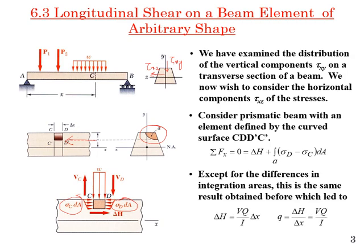If you remember, the sum of forces in the x-direction must equal zero. So delta_H = integral of (sigma_D minus sigma_C) dA = 0. These forces sigma_D and sigma_C are both due to bending moment, which we already derived previously. When we substitute sigma_D and sigma_C, we arrive at the same equation: delta_H = VQ/I · delta_x, and the shear flow is simply VQ/I.